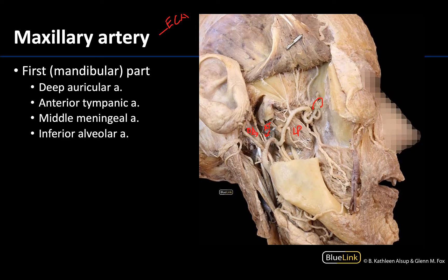Moving a little more distally, you're going to have the middle meningeal artery, which I just outlined right here. This will enter the skull via the foramen spinosum to supply the dura mater — that's where it gets the 'meningeal' in its name. The last branch of the first part is the only one that is really descending — the rest are ascending — and that's the inferior alveolar artery, which will accompany the inferior alveolar nerve (IAN) into the mandibular foramen. You can see it heading into the bone into that mandibular foramen.